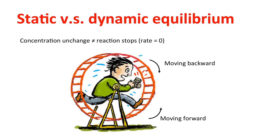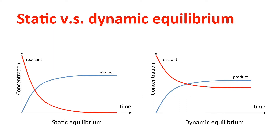Forward and backward reaction rates are not equal to zero, but there is no net change in concentration. These two graphs are very important, so please pay attention. For the left-hand side, it is the concentration against time for static equilibrium. Eventually all reactants become product — the red line for reactant keeps going downward while the product moves upward. For the right-hand side, dynamic equilibrium, the reactant's concentration becomes stable at a certain point and does not change anymore. The product increases at first, but after a certain time its concentration also becomes stable. In dynamic equilibrium, both reactant and product concentrations will not equal zero.